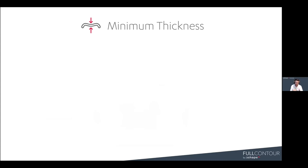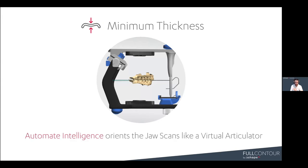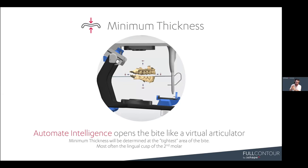Minimum thickness is really achieved in an awesome way — we take the bite relationship into consideration. You upload your upper and lower scans in occlusion, and the automated intelligence orients the jaw scans like a virtual articulator would, establishing a TMJ relationship to the arch. Then we open the bite in a hinge-like movement relative to the minimum thickness you requested. We determine the tightest area of the bite — most often the lingual cusp of the second molar — and that area is honored as your minimum thickness. You'll be thicker around the arch and into the anteriors as the bite opens, resulting in a nice uniform occlusion to the opposing.